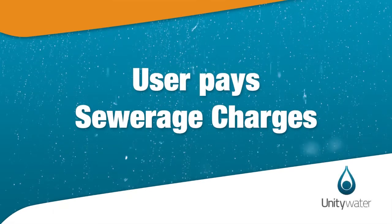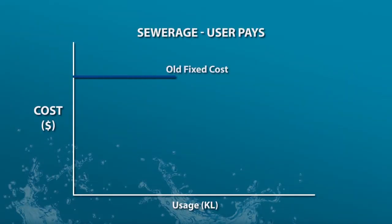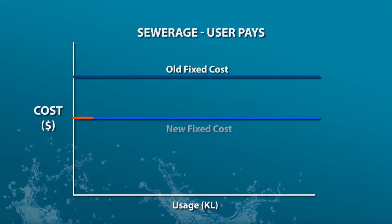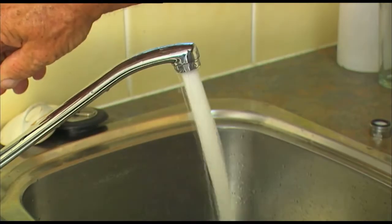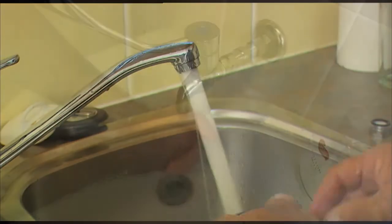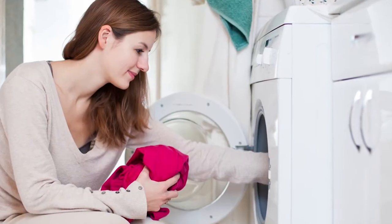In a further extension of the user pays approach, we've reduced the fixed access fee for sewerage connections, offsetting this with a usage fee based upon just how much sewage you're contributing to the network. Sewage includes everything that enters kitchen and bathroom drains, is flushed down toilets, or is discharged from appliances such as dishwashers and washing machines.